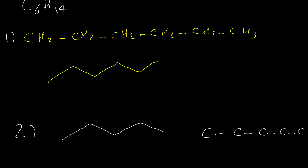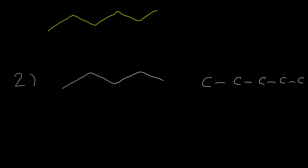Keep in mind that in structures like this, positions that appear different may be identical. For the carbon with four bonds, putting a group here, here, or here — those three positions are identical. So placing a carbon in any of those positions gives the same compound, not a new isomer. Knowing this, we can have two different isomers: a branch on the second carbon and a branch on the third carbon.